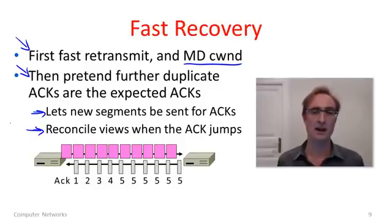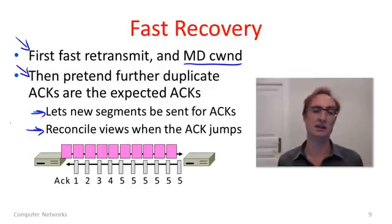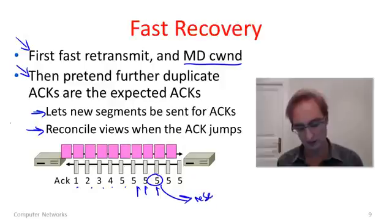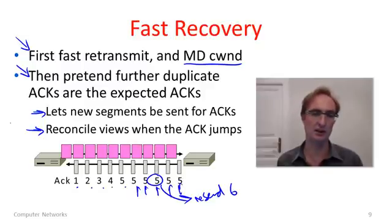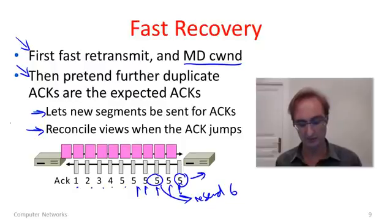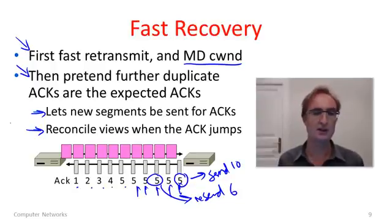Eventually, after a good round trip time has gone by, the ACK number will jump as we fill in the hole. At that point we can reconcile the inflated shadow window with the actual ACKs received and packets sent, and exit fast recovery. On the diagram, ACKs of 5 come in as duplicates, we do the resend of segment 6, and after halving our congestion window we can start sending new data — say segment 10 — as ACKs come in, even though our ACK number hasn't jumped yet. That's what fast recovery lets us do.